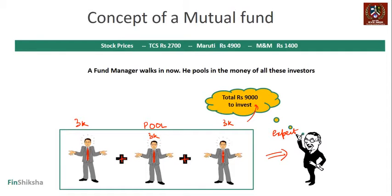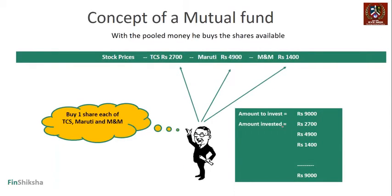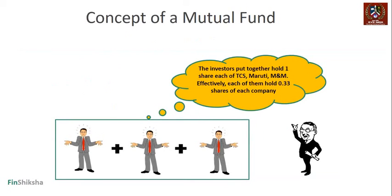All three investors agree and combine their money: 3,000 plus 3,000 plus 3,000 becomes 9,000 rupees available to invest. With 9,000 rupees, you can purchase one share each of TCS, Maruti, and M&M. Now the portfolio consists of one share each of TCS, Maruti, and M&M. The actual ownership of this diversified portfolio belongs to those three investors — let's name them A, B, and C — who together created this pool.